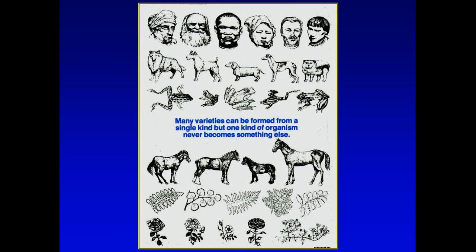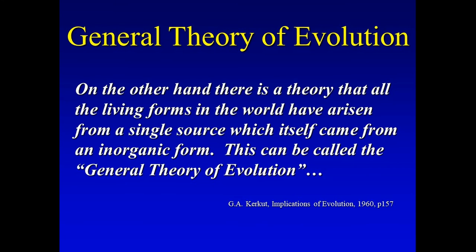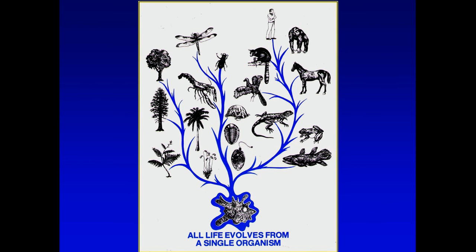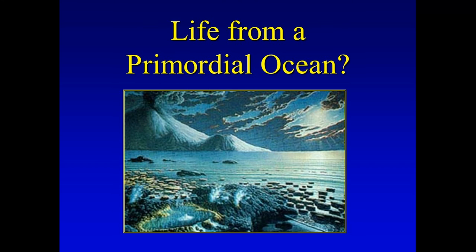Here's the general theory: the idea that all living forms arose from a single source, which came from something inorganic — meaning dead. This is what students get in their textbooks: that all life evolved from some single organism, some single cell, somewhere in a prehistoric primordial soup.